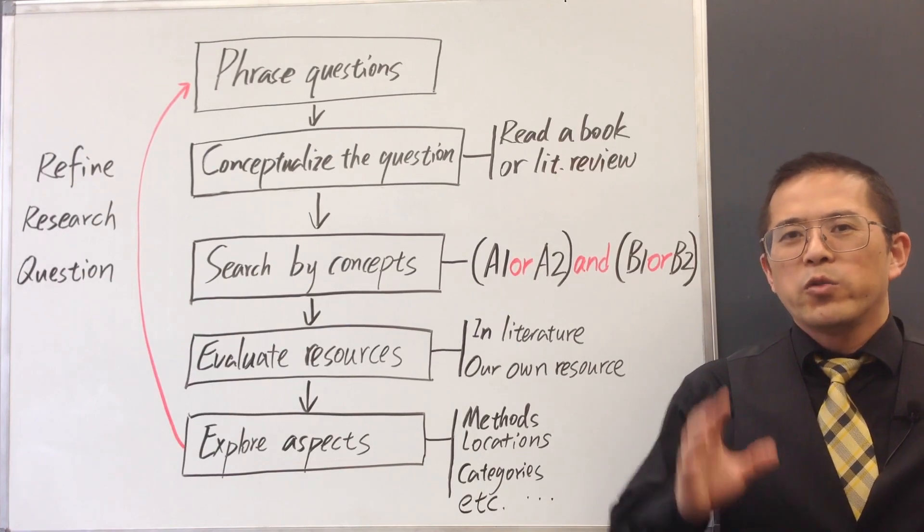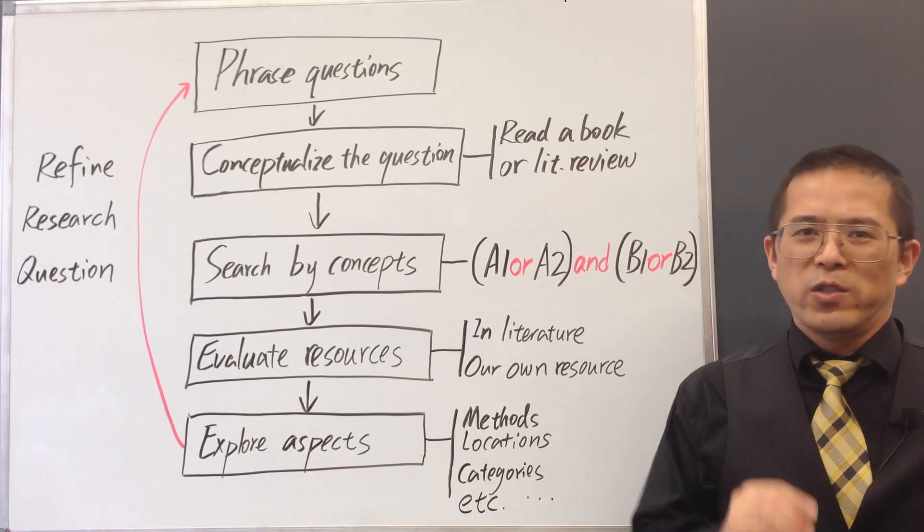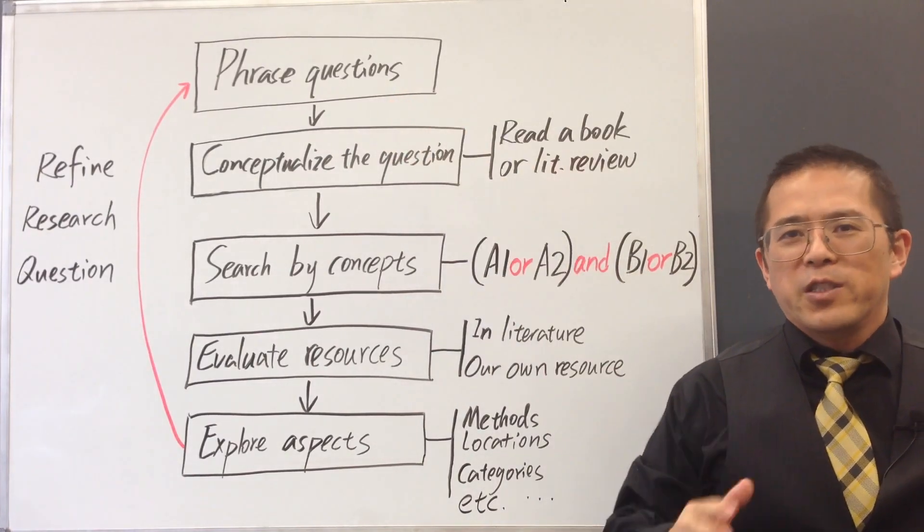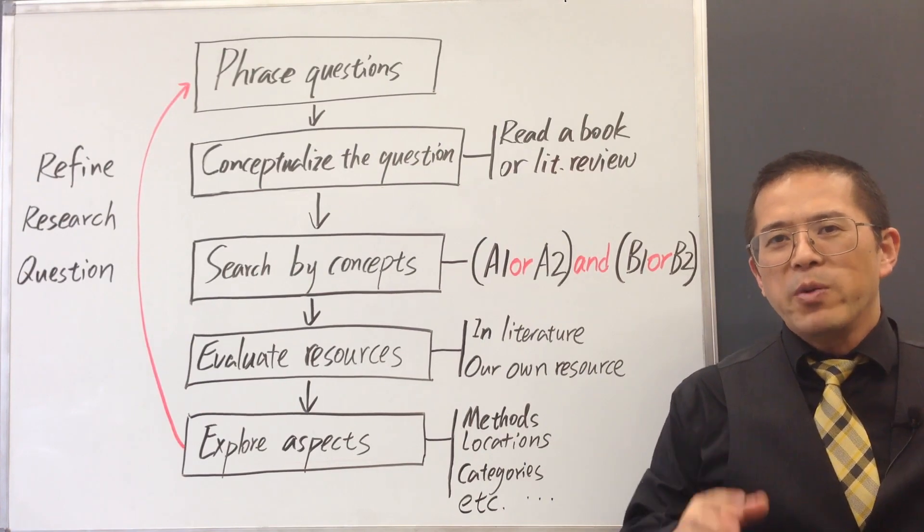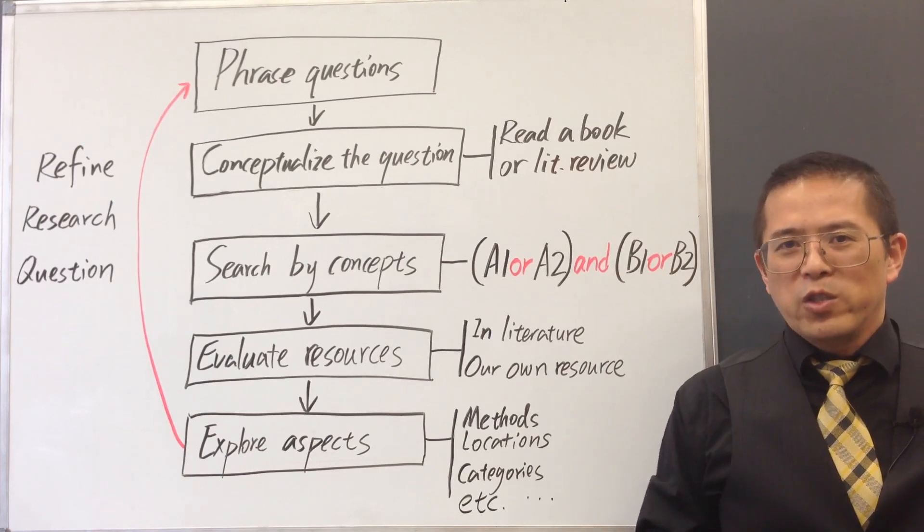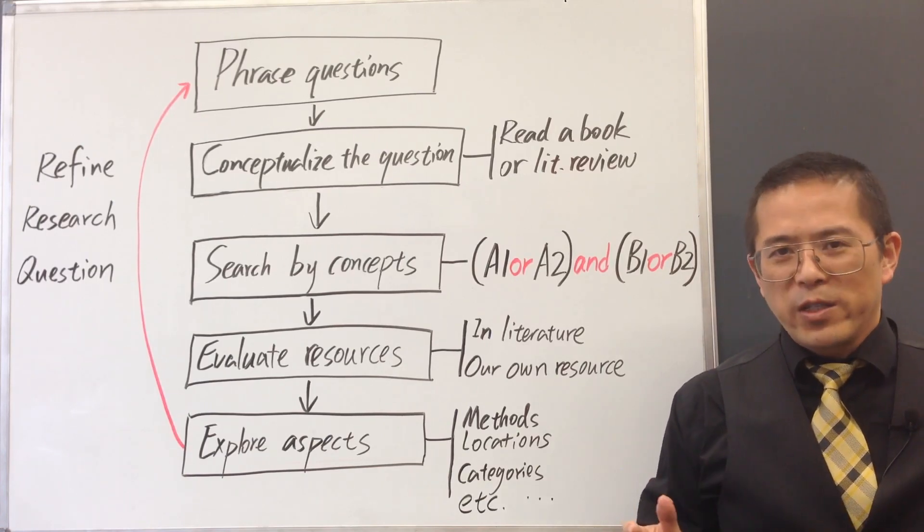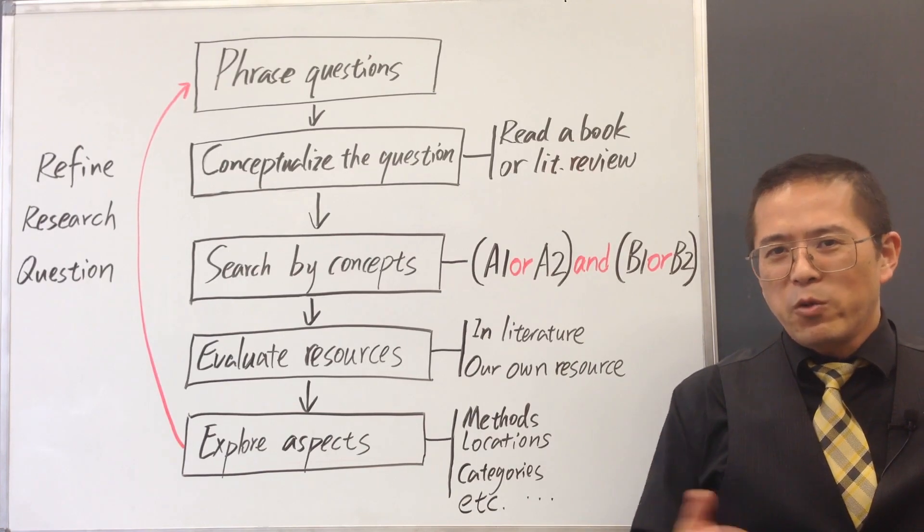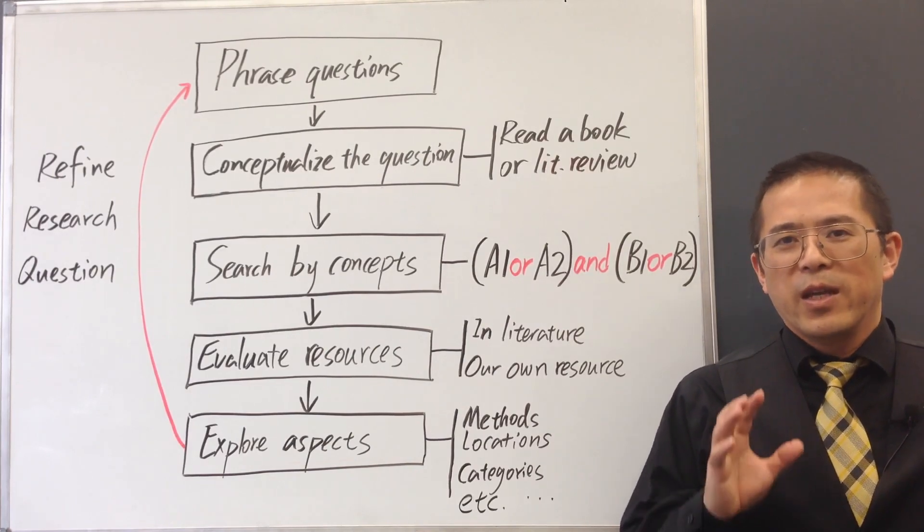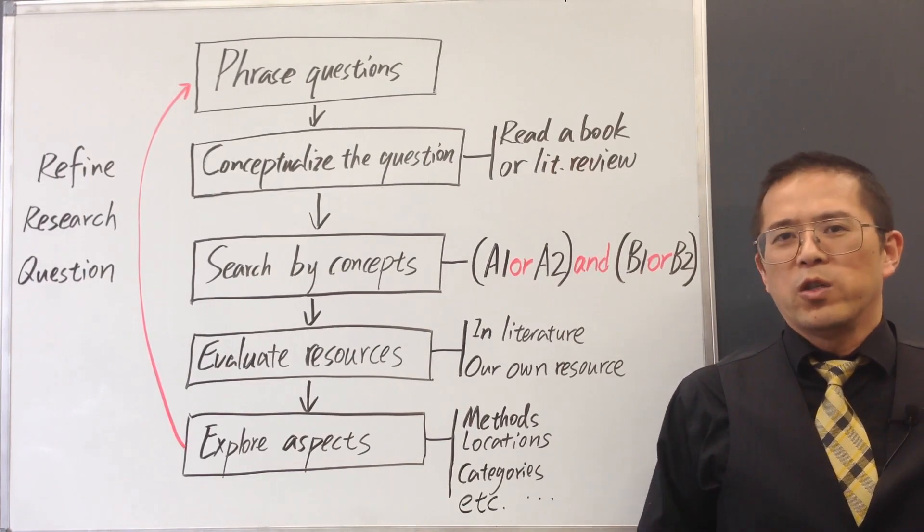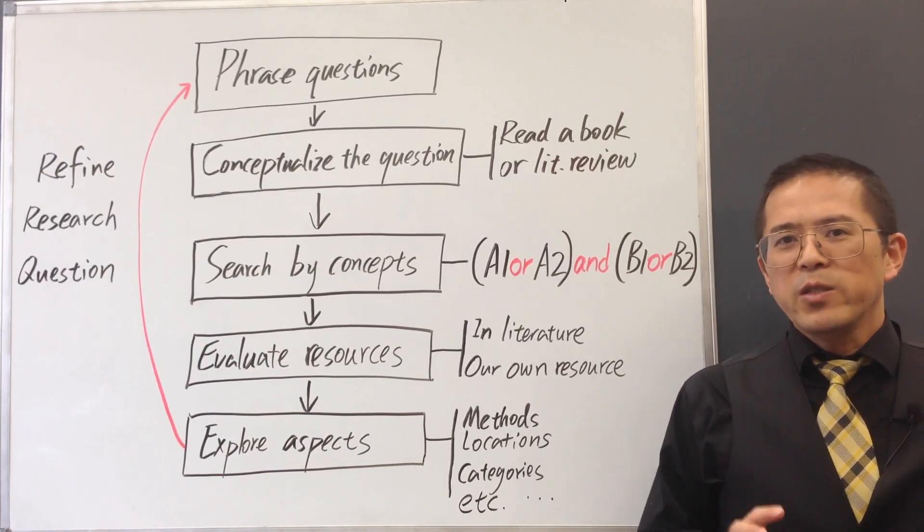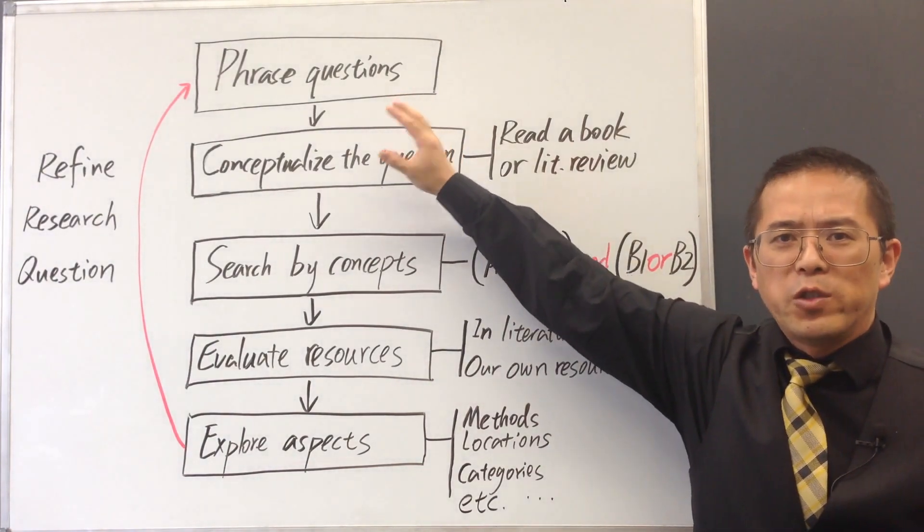First, we want to turn our topics into a set of questions. Formulating well-focused questions is often the first step in literature search. It will help us to find the focus of our research. We may want to express the questions in several different ways, or break the questions into sub-questions to clarify its meaning. Some questions may have assumptions behind them. We want to make sure we are clear about those assumptions.